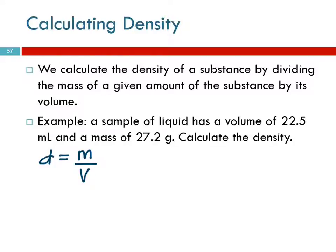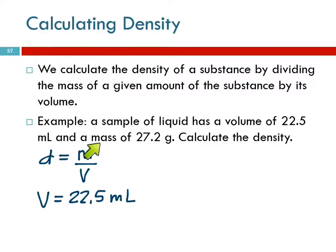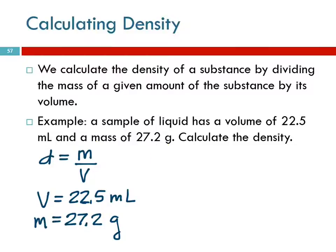Simple example: a sample of liquid has a volume of 22.5 milliliters and a mass of 27.2 grams. Calculate the density. We have to use an equation; we can't do dimensional analysis on this one. Volume equals 22.5 milliliters — and even if they don't use the word volume, you should know milliliter is a unit of volume. And 27.2 grams is the mass.